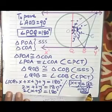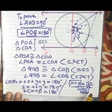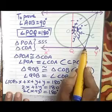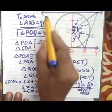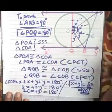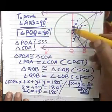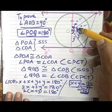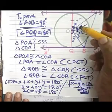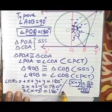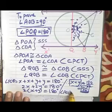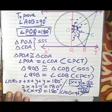X plus Y equals 90 degrees means — see the figure — angle AOB. We need to prove that angle AOB equals 90 degrees. AOB — one part is X and the other part is Y. So angle AOB equals 90 degrees.